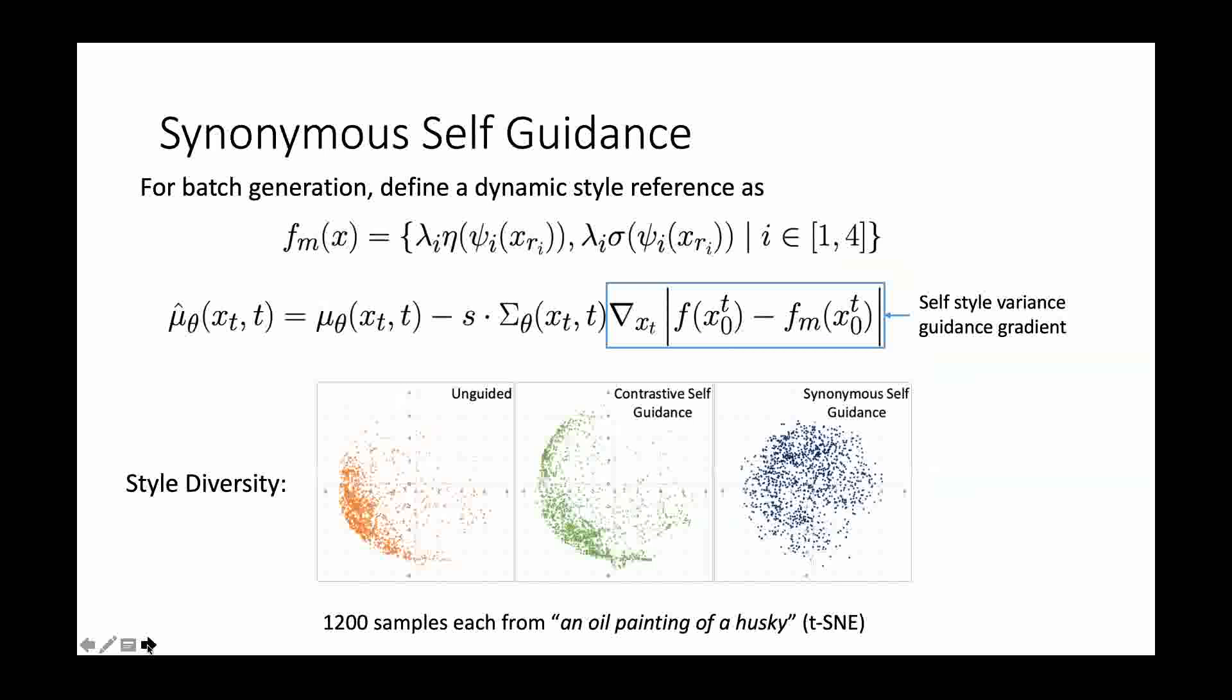Alternatively, we have also proposed synonymous self-guidance, which aims to generate a set of images of the same style without knowing a specific style reference. Here, we actually define a dynamic style reference. As a result, as shown at the bottom, the synonymous self-guidance is the best in terms of style diversity for generated examples, compared to unguided one or the contrastive self-guidance.